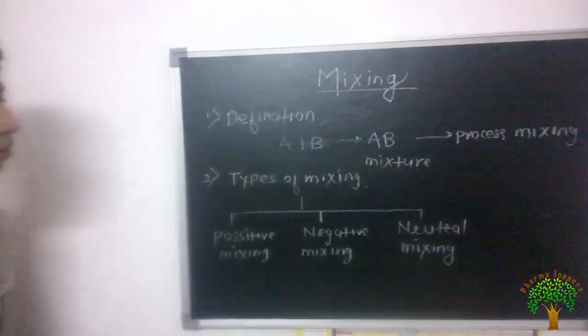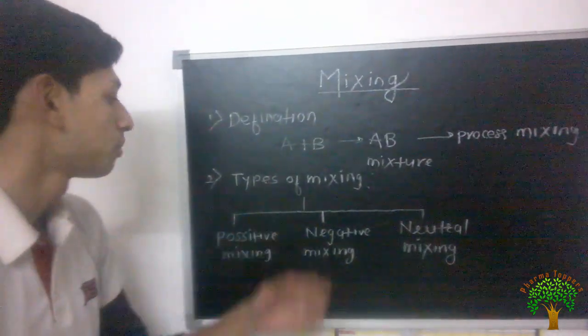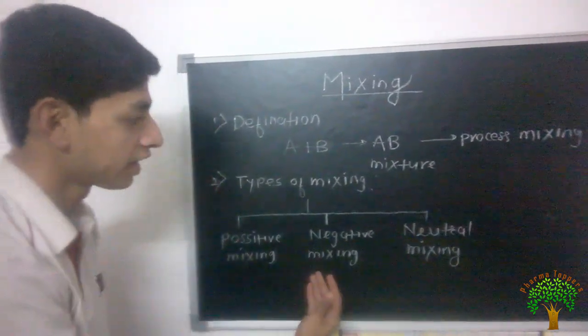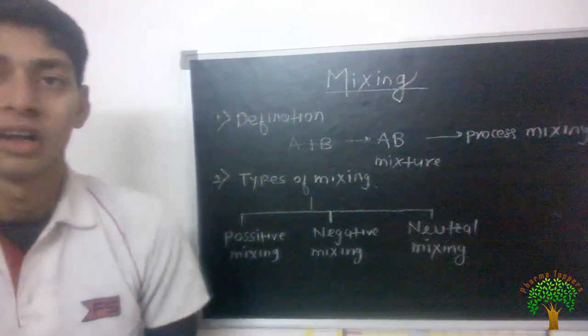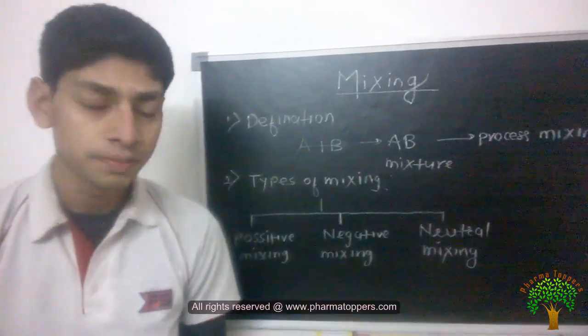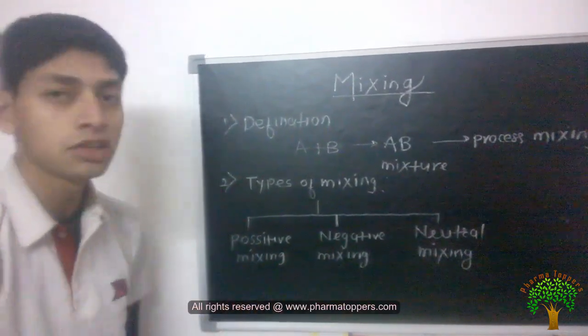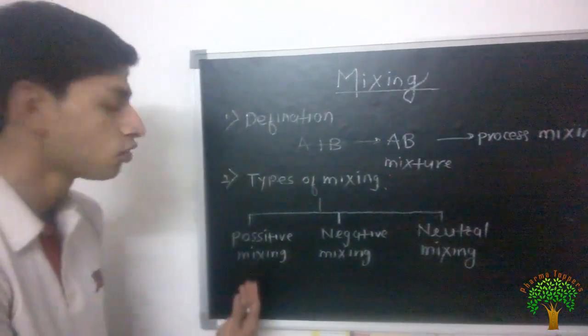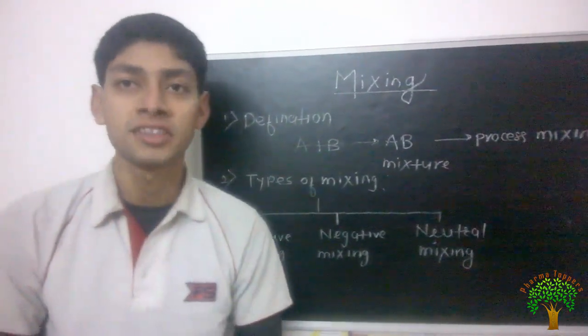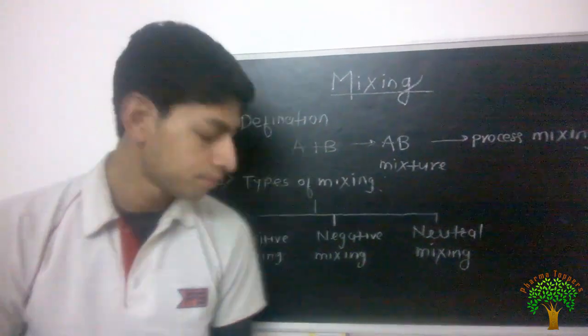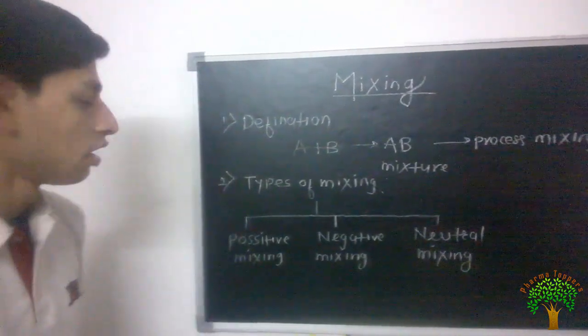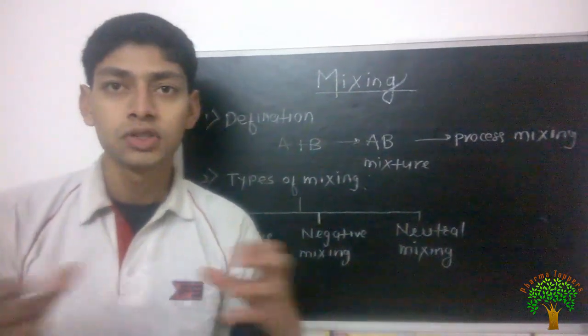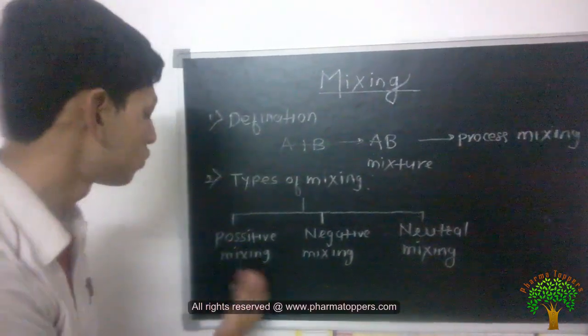Now we are moving towards the types of mixing. There are mainly three types of mixing: positive mixing, negative mixing, and neutral mixing. First of all, positive mixing. Positive mixing is a spontaneous process and it is irreversible and does not require any kind of energy for mixing two components. Whenever two miscible liquids or two miscible gases are mixed to each other, it forms positive mixing.